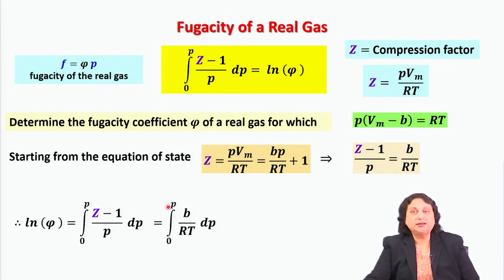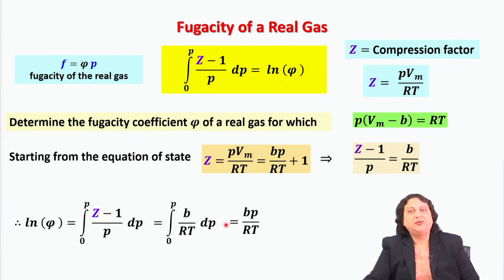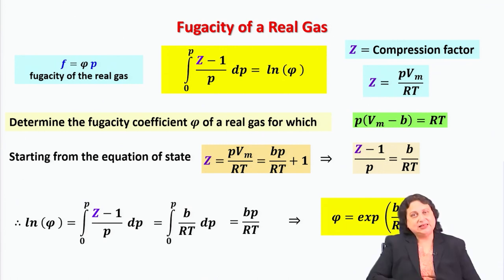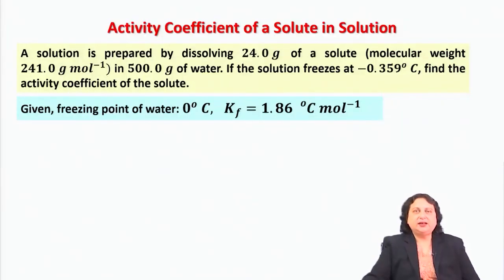Integrating, ln φ = ∫₀ᵖ (b/RT) dp. Since b is a constant for the gas, T is held constant, and R is universal, the result is ln φ = b·p/RT. Therefore φ = exp(b·p/RT). As you can see, if you know the equation of state you can find out the fugacity of the real gas and how far it deviates from ideal gas behavior.